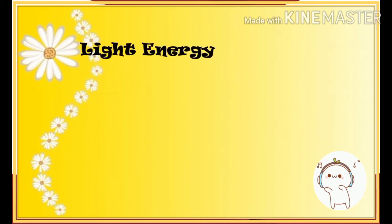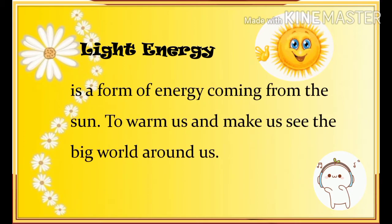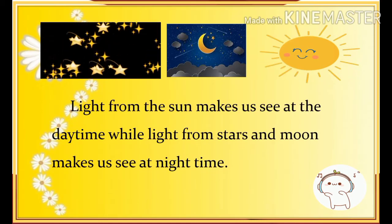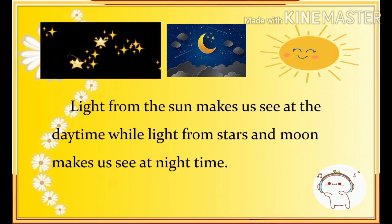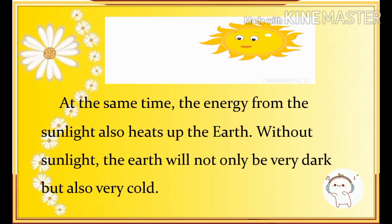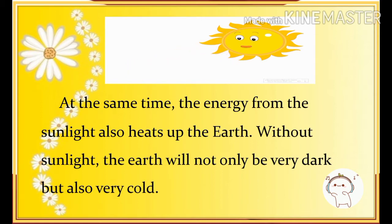Let's define light energy. Light energy is a form of energy coming from the sun to warm us and make us see the big world around us. Light from the sun makes us see at daytime, while light from the stars and moon makes us see at nighttime. The energy from sunlight also heats up the Earth. Without sunlight, the Earth will not only be very dark, but also very cold.